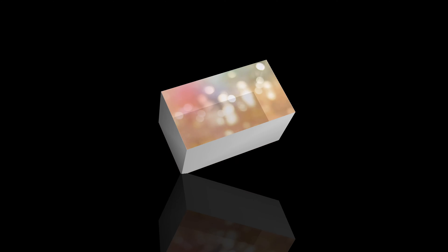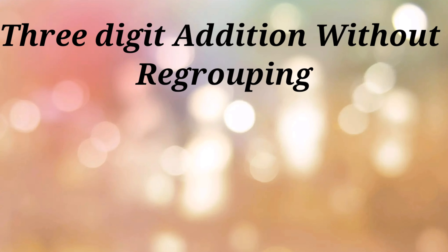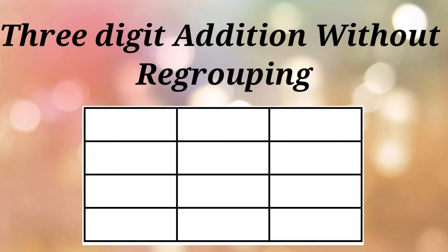Students, now we can see the 3-digit addition without regrouping. First sum: 361 plus 423.